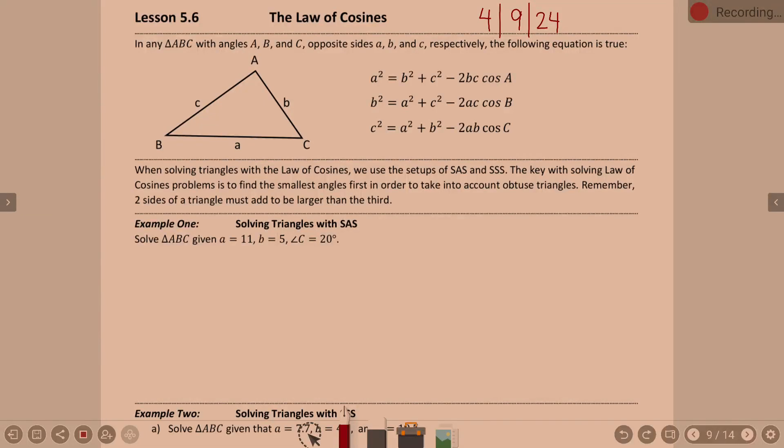If you remember law of sines, we had certain times we could use it based on the location of given angles and sides. In law of cosines, again, it's all dependent on location and what you're provided — triangle ABC with sides ABC respectively. There's basically one law of cosines, but it's written in three different versions based on what you were given.